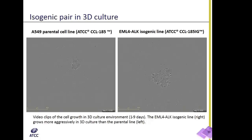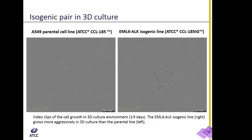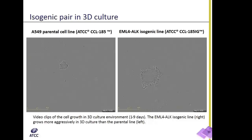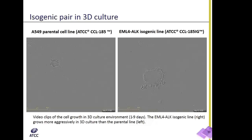The EML4 mutant line grows much more aggressively than the Parental in a 3D culture environment. As you recall the growth curve shown in the previous slide, in 2D culture these cell lines grow in a more consistent manner to one another than what we are observing here in a 3D culture environment.